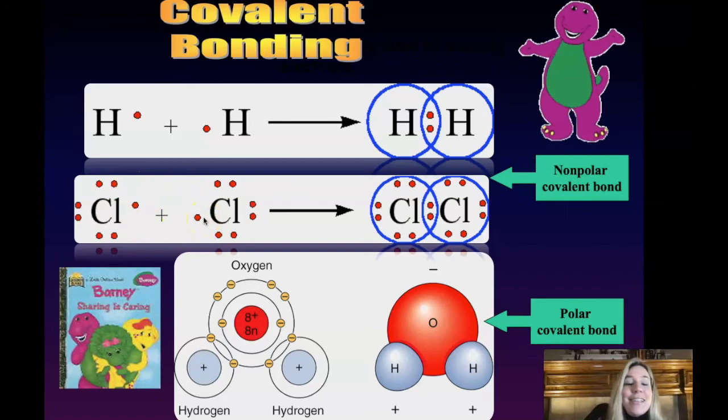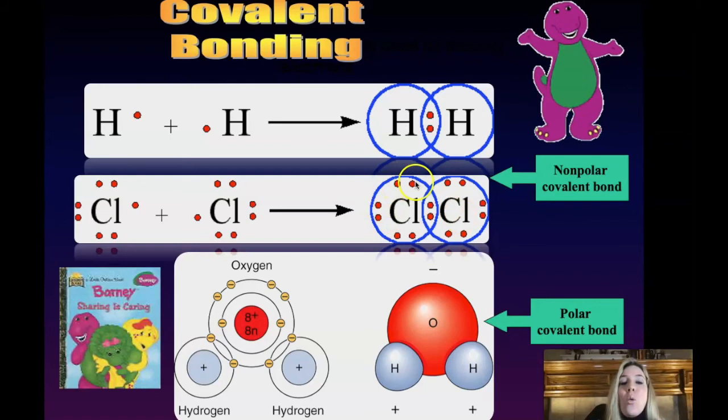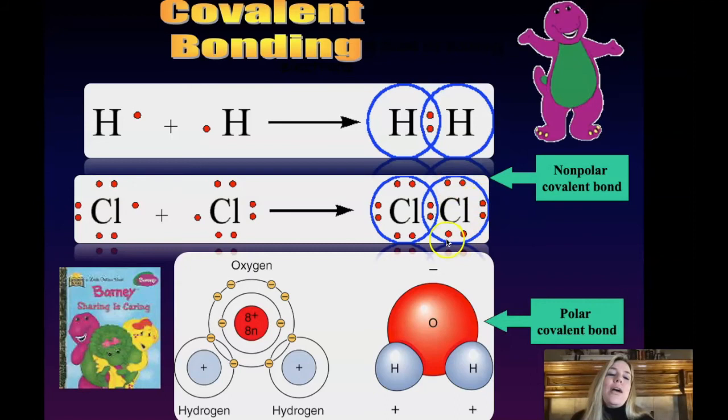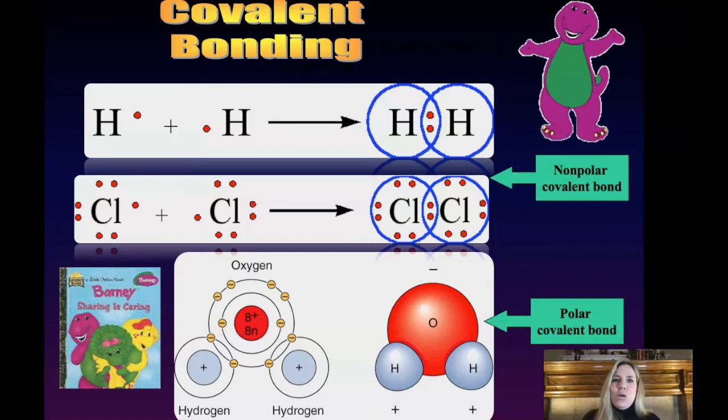In Cl2, when the two chlorines share their lone electrons — cover up the one on the right, count the left: one, two, three, four, five, six, seven, eight — its octet rule is fulfilled. Cover the left, count the right: one through eight — also a happy camper. So two happy elements result from sharing their lone electrons — that's covalent bonding. With hydrogen gas and chlorine gas, since both involve two atoms of the same element, they have equal electronegativity — an equally matched tug of war. The electrons spend an approximately equal amount of time around each atom. This is called a nonpolar covalent bond — there's no polarity to the pull of the electrons, they're evenly shared.